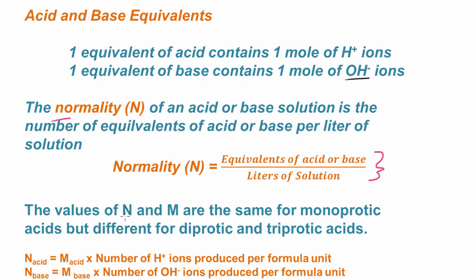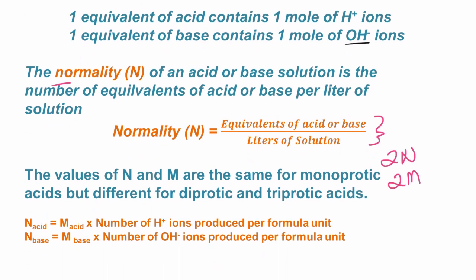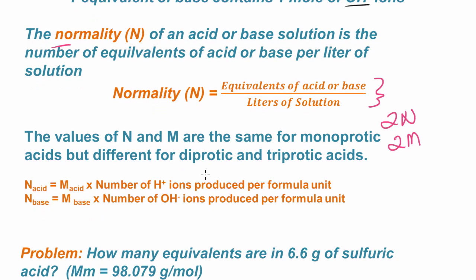Well, it turns out that when we're looking or comparing normality and molarity, that they are going to be the same for monoprotic acids. So in other words, if I say that I have a 2-normal hydrochloric acid solution, that would be equivalent to a 2-molar hydrochloric acid solution. If I say I have a 0.5 molar nitric acid solution, that would be the same as 0.5 molar nitric acid because those are monoprotic acids. But they're going to be different for diprotic and triprotic acids.